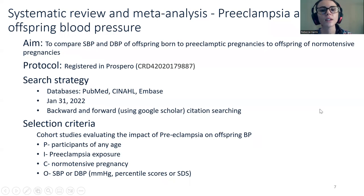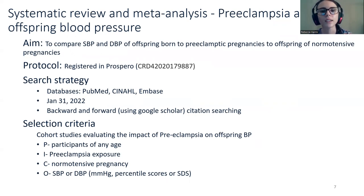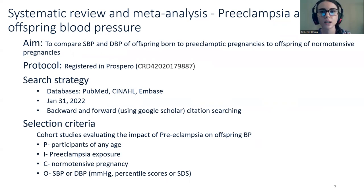Our aim was to conduct a systematic review and meta-analysis to compare blood pressure of offspring born to preeclamptic versus normotensive pregnancies. We registered our protocol in PROSPERO, and to search for articles we searched the PubMed, CINAHL, and Embase databases from their inception to January 31st, 2022. We also searched citations from cohort studies and previous reviews, as well as conducted forward citation searching using Google Scholar.